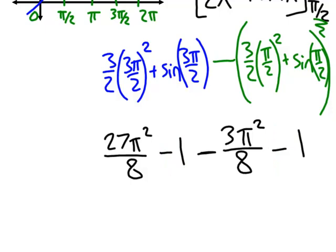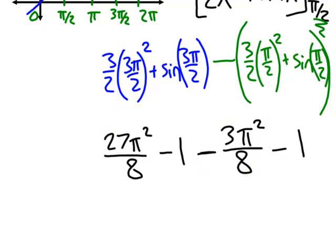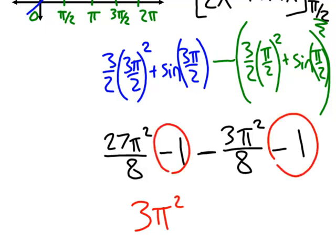So let's combine our like terms. If I have 27 pi squared over 8 minus 3 pi squared over 8, that's going to give me 24 pi squared over 8. And 24 over 8 reduces to just 3. I'll put the pi squared. And I'll combine the minus 1 and the minus 1 and get minus 2.